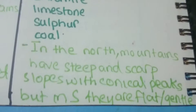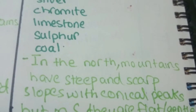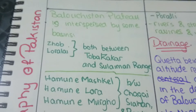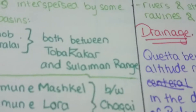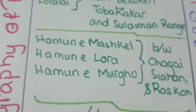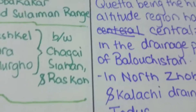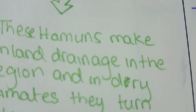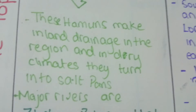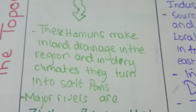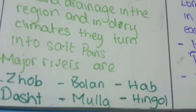In the south, mountains have flat and gentle slopes. The Balochistan Plateau is interspersed with some basins: Zhob and Loralai, both between the Toba Kakar range and Suleiman. There are three hamuns — one is the Lora hamun, between Chaghai, Siyahan, and Raskoh ranges.